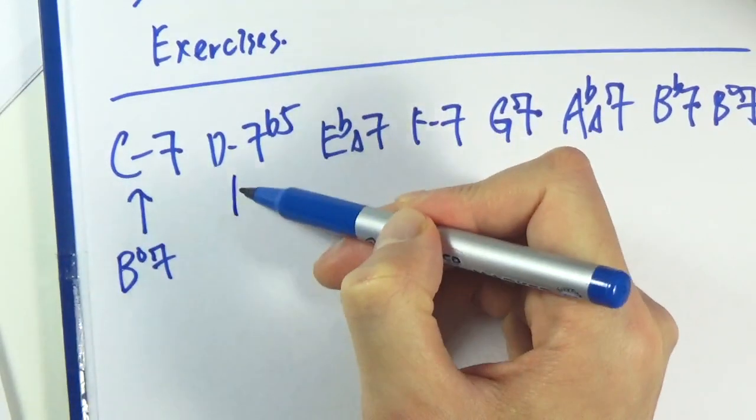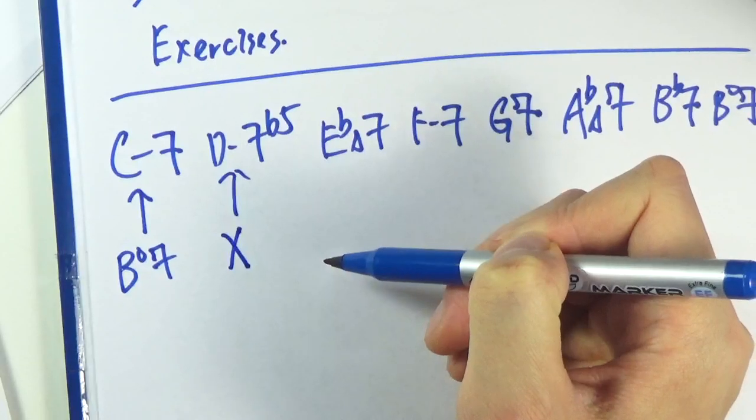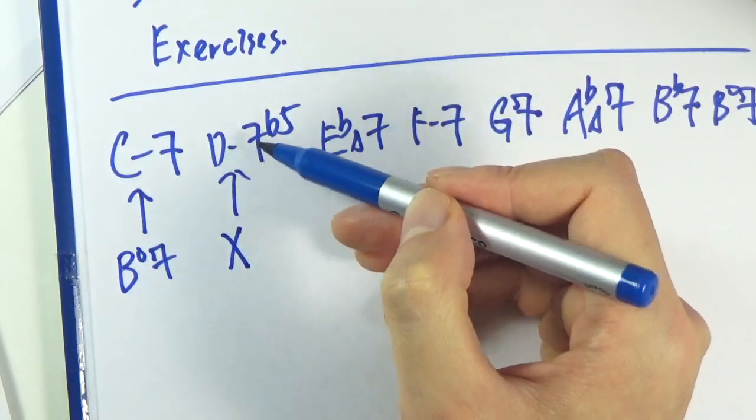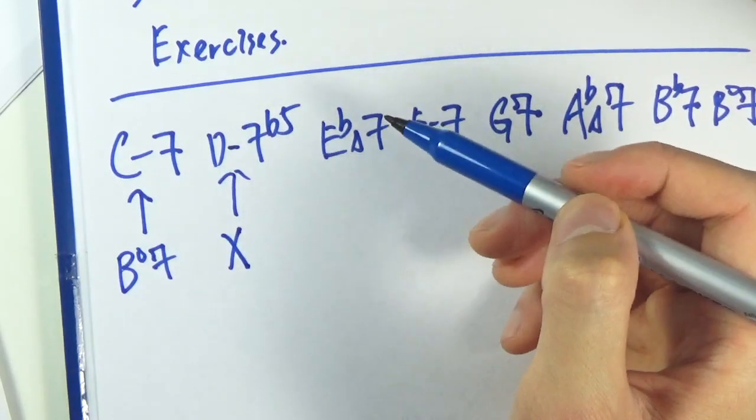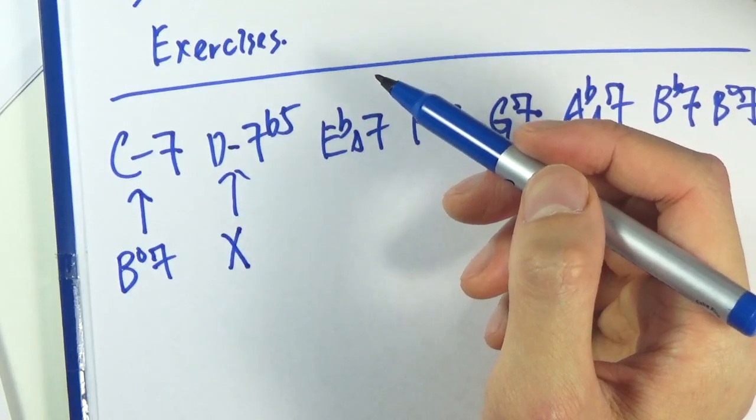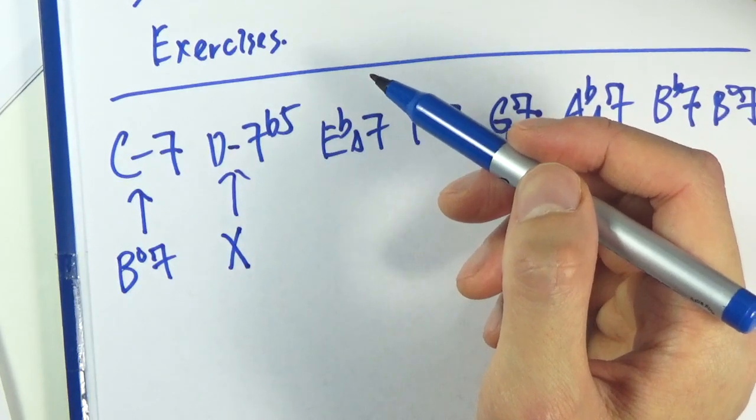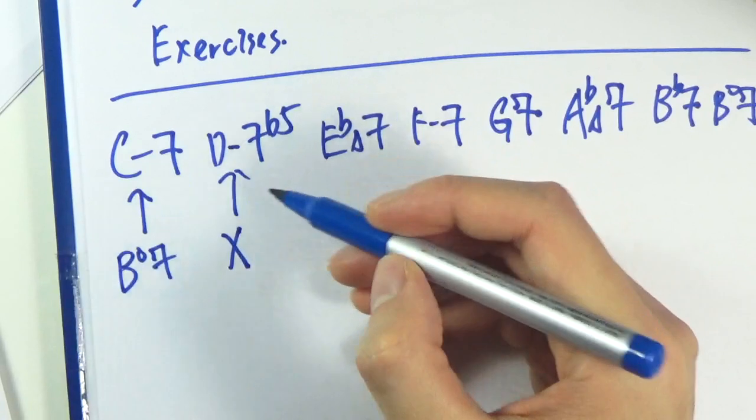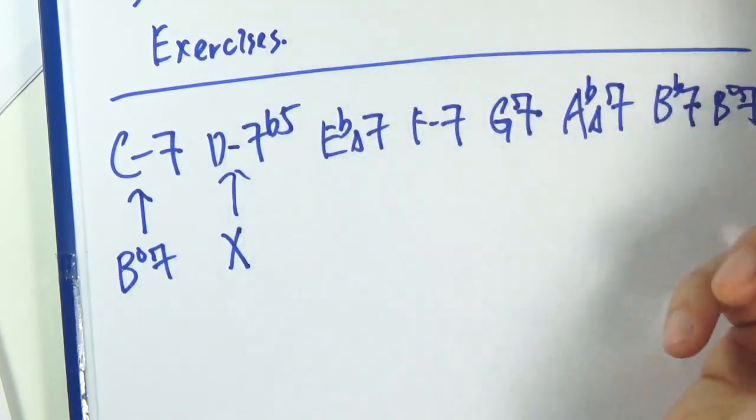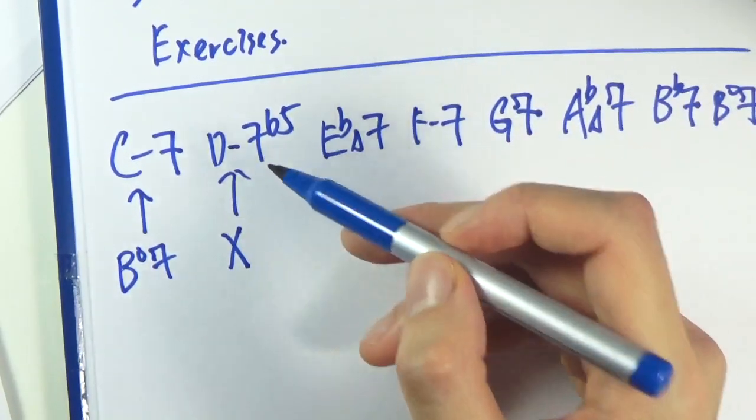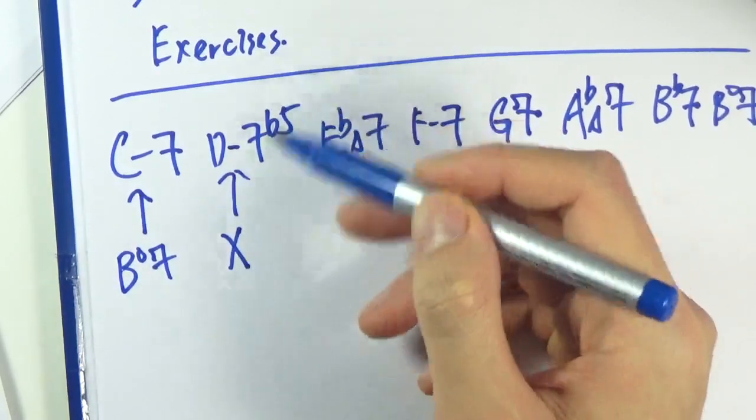So there's no diminished chord for this one, because it's a D minor 7 flat 5, so there's no diminished chord, no secondary dominant. So there's no secondary dominant for the chord, and hence no diminished chord for this guy.